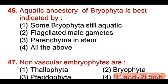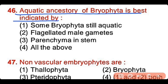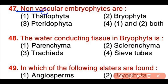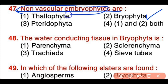Question number 46: The aquatic ancestry of bryophytes is best indicated by — some bryophytes are still aquatic, flagellated male gametes are present, parenchyma in the stem is present, or all of the above. The correct answer is option 2 — by the presence of flagellated male gametes, it is thought that bryophytes had aquatic ancestors. Question number 47: The non-vascular embryophytes are thallophytes, bryophytes, streptophytes, or both 1 and 2. The correct answer is option 2. Bryophytes are non-vascular embryophytic plants.